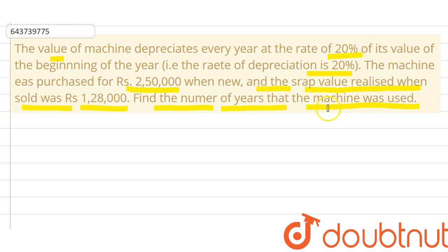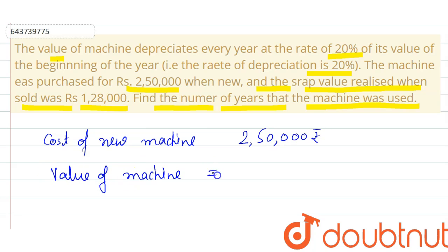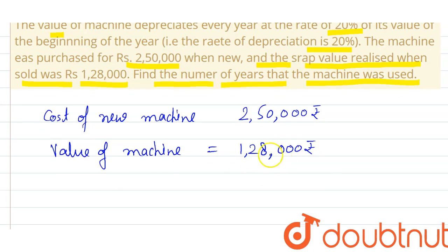So the initial value of machine, that is cost of new machine, is 2,50,000 rupees. Now according to this rate of depreciation, value of machine after certain years - that number of years we have to calculate - is 1,28,000, and rate of depreciation is 20%.